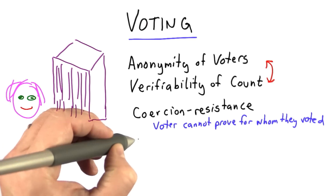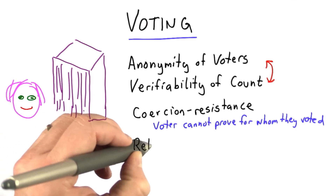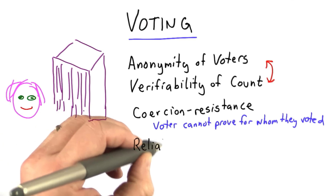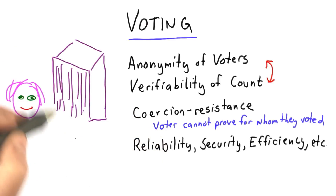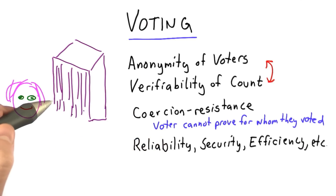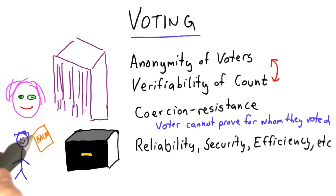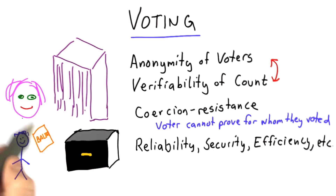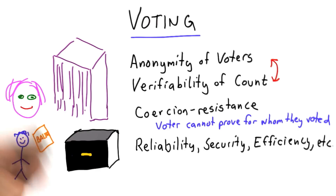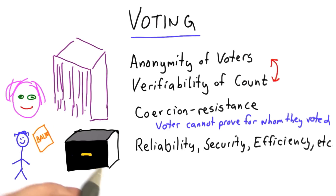And then we have all the usual goals of reliability and security. These things are hard to achieve. There are good ways to achieve them with paper ballots, if we have trusted ballot boxes guarded by trusted election officials, and if we have enough trusted third parties, well maybe we can trust them to report the right tally.